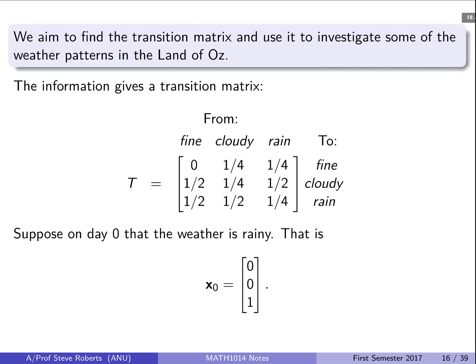OK, so now we can encode that transition information into our transition matrix. And so we see on our fine day that there's a zero chance of staying fine and then a one half chance of either being cloudy or rainy.